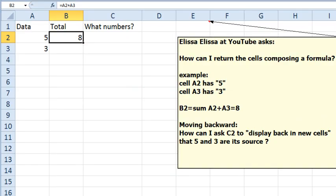Alright, so today's question sent in from Alyssa at YouTube. How can I return the cells composing a formula? So we have just a simple formula, B2 is equal to A2 plus A3, 5 plus 3 is equal to 8, but over in C2, she wants to display that the 5 and the 3 are the source.